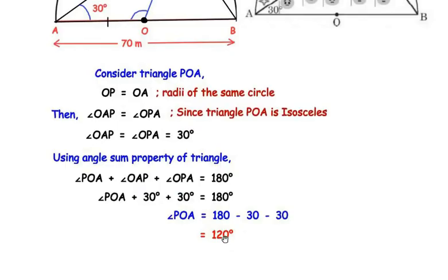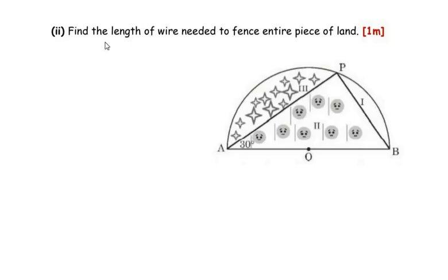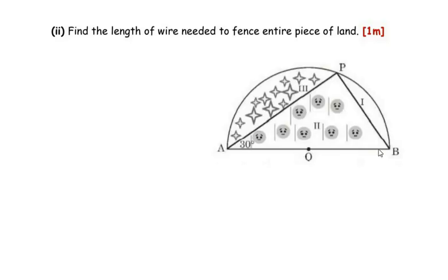Now the second sub-question: find the length of wire needed to fence the entire piece of land. Whenever the question mentions fencing, it refers to the perimeter of the shape. The perimeter consists of the circumference of the semicircle and the diameter, as these two form the boundaries of the land.